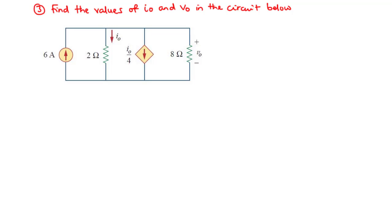For example 3, we are going to find I0 and then V0 in the circuits below. Here we have two current sources: 6 amperes and then I0 over 4 amperes. We want to find the current flowing through the 2 ohms branch, that is I0, and then we want to find the voltage across the 8 ohms resistor.